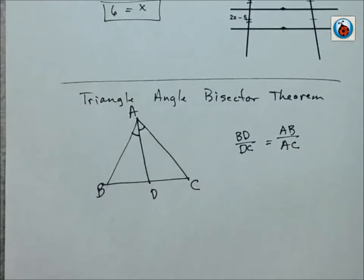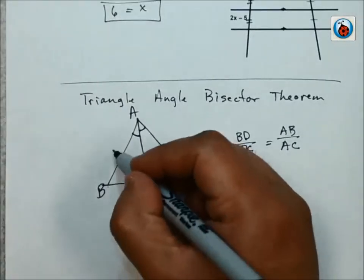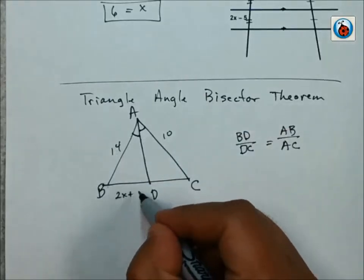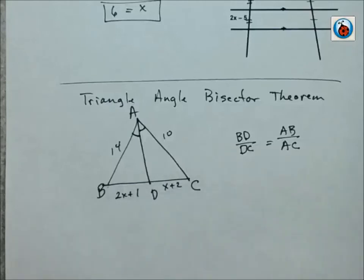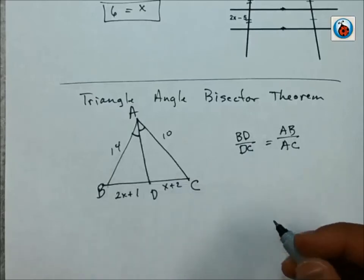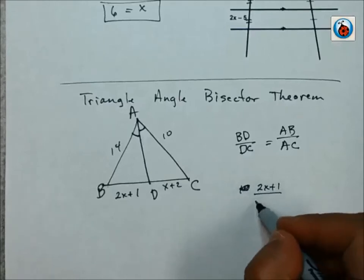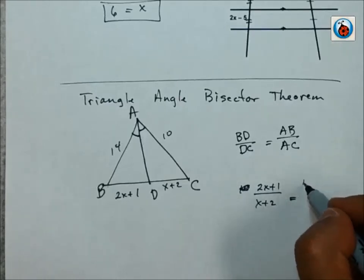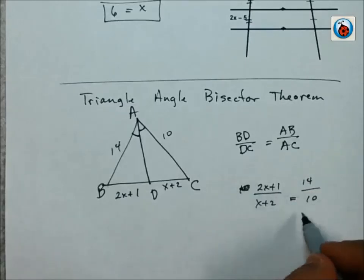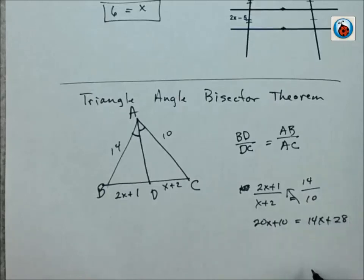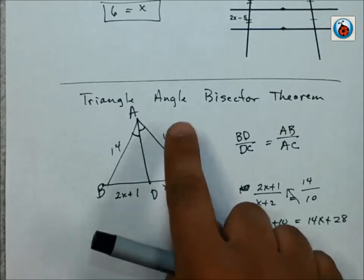So let me set up some numbers in here for you. If I know that this is 14 and this is 10, and I have this as 2X plus 1 and X plus 2, I'm going to use this proportion to solve this problem. So I would say that 2X plus 1 over X plus 2 equals 14 over 10. And then I would use cross products, so this would give me 20X plus 10 equals 14X plus 28. If I subtract the 14X, it gives me 6X. 28 minus 10 would give me 18. Divide by 6 tells me that X is 3.